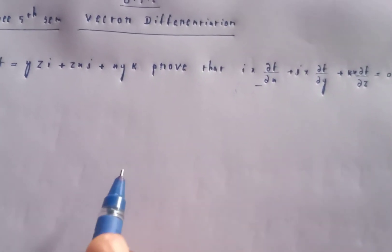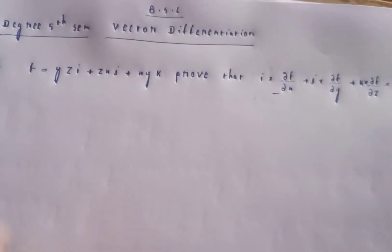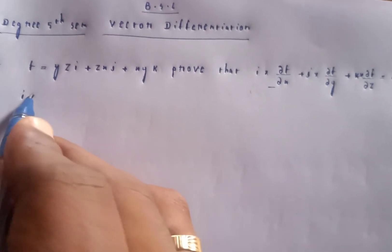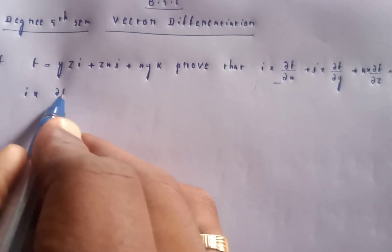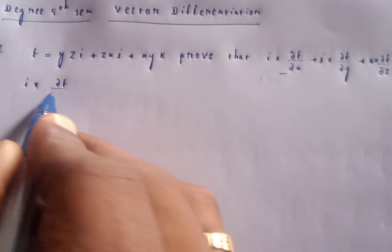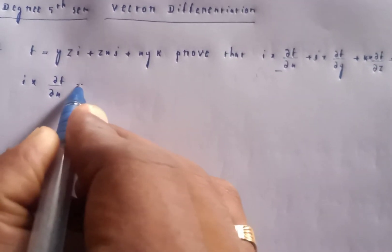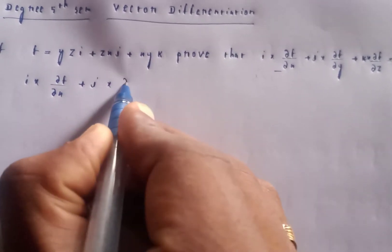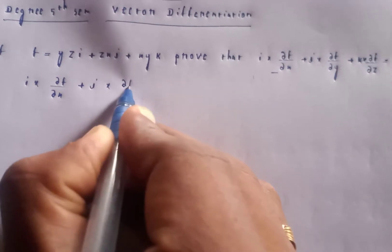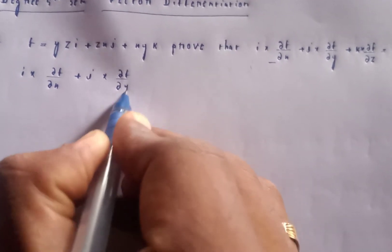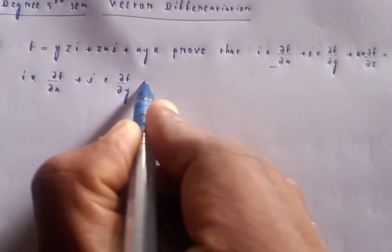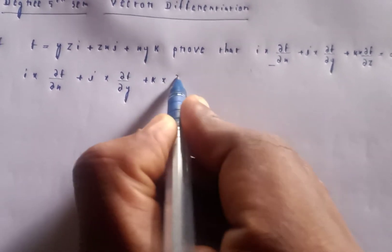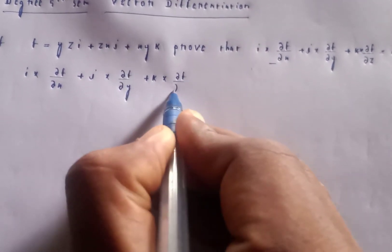To prove this, we need to show that i cross ∂f/∂x plus j cross ∂f/∂y plus k cross ∂f/∂z equals zero. Let's calculate each term step by step.